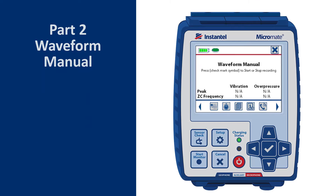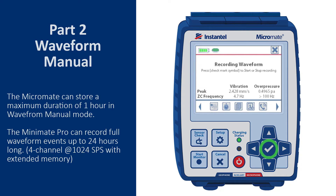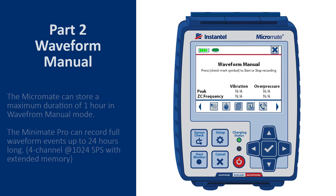The second record mode is Waveform Manual. This manual mode is convenient when automatic triggering is not practical, or to record the background vibration and overpressure levels for an extended time period in the vicinity of a site. In this mode, the operator will put the unit in monitor mode and activate the unit by pressing the Start Monitoring check mark key. Pressing the check mark a second time will tell the unit to stop recording.